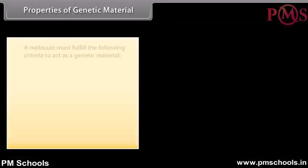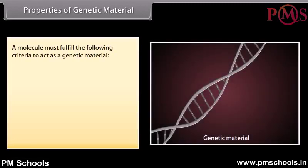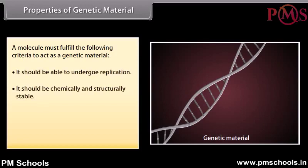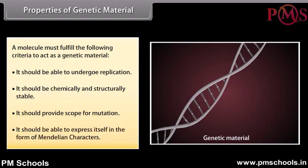A molecule must fulfill the following criteria to act as a genetic material: it should be able to undergo replication; it should be chemically and structurally stable; it should provide scope for mutation; and it should be able to express itself in the form of Mendelian characters.